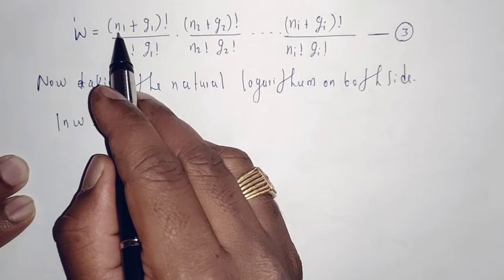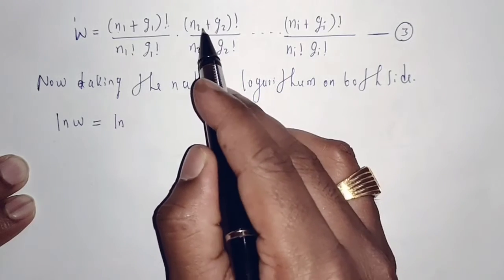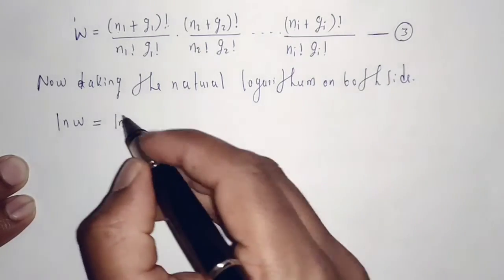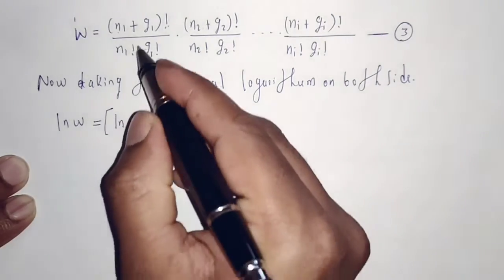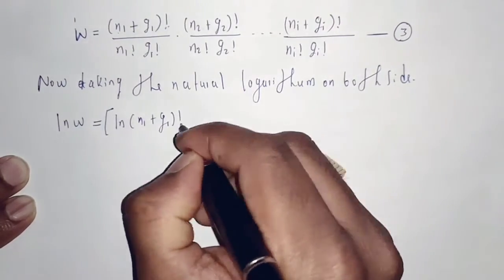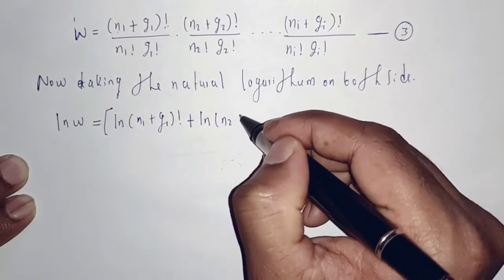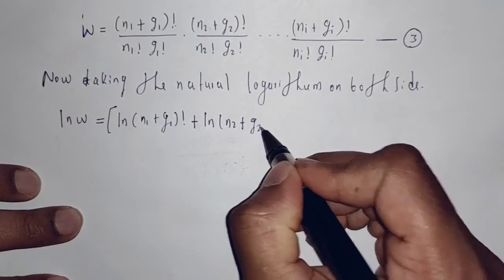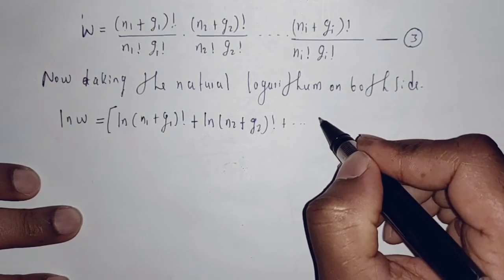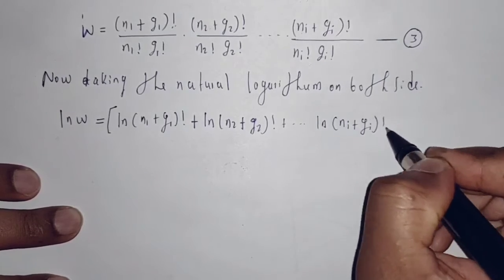In the numerator we have (n1 + g1) factorial, (n2 + g2) factorial, and so on, (ni + gi) factorial. So we can write it as ln(n1 + g1)! + ln(n2 + g2)! + ... + ln(ni + gi)!.